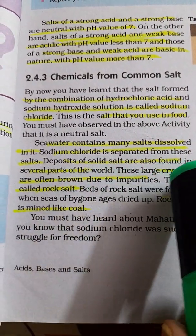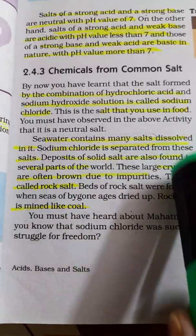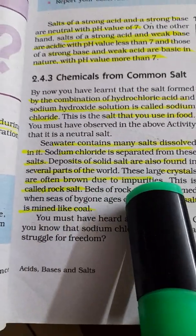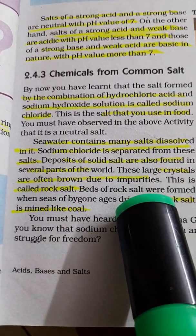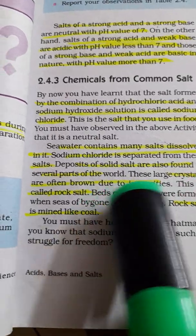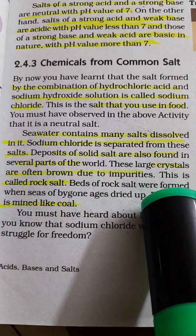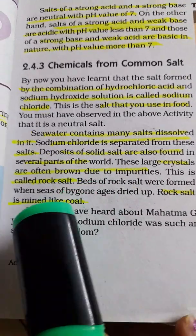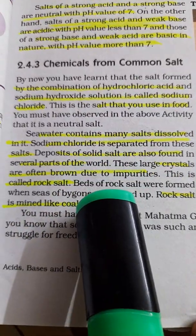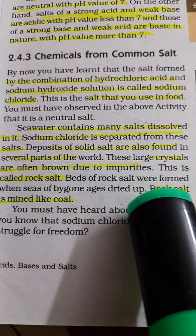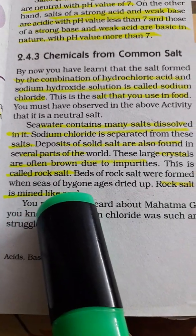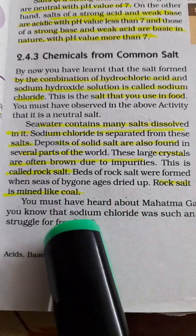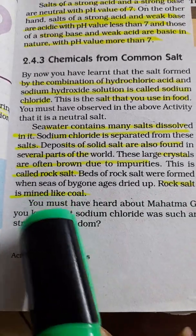You can also see deposits of sodium salt in several parts of the world, always coming as very large crystals which are brown in color. Naturally, salt is whitish in color, but when you first get it, it is brown due to the presence of impurities. This is called rock salt. The large crystals of sodium chloride combined with impurities form rock salt when seas of bygone ages dried up. You can mine rock salt like coal.